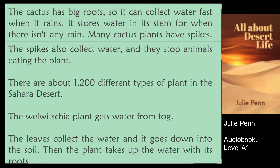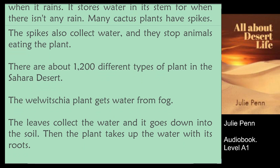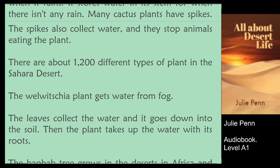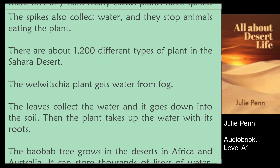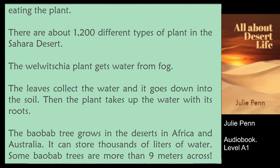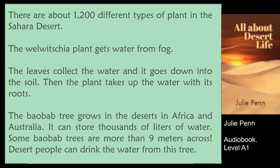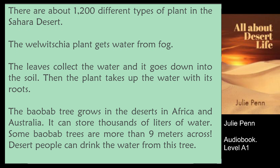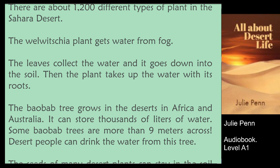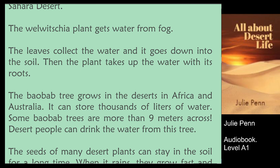There are about 1,200 different types of plant in the Sahara Desert. The Welwitchia plant gets water from fog. The leaves collect the water, and it goes down into the soil. Then the plant takes up the water with its roots.